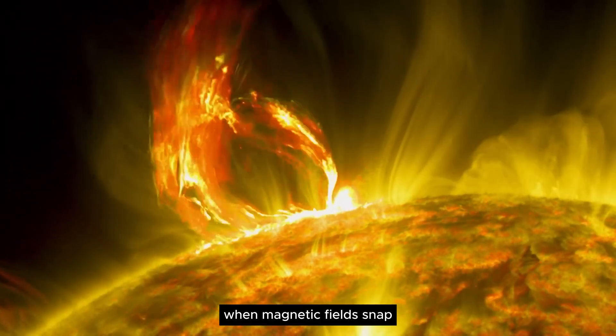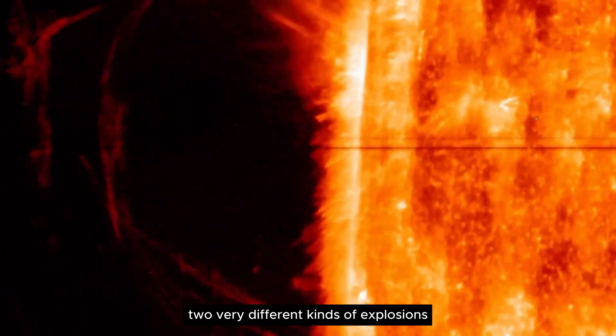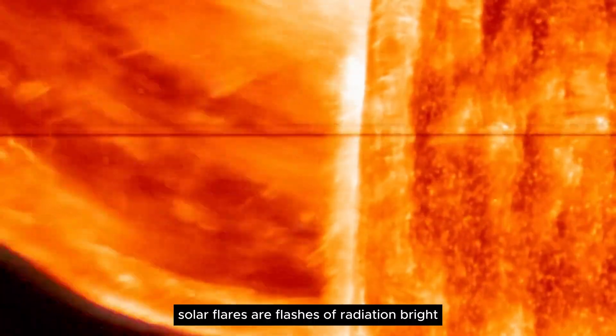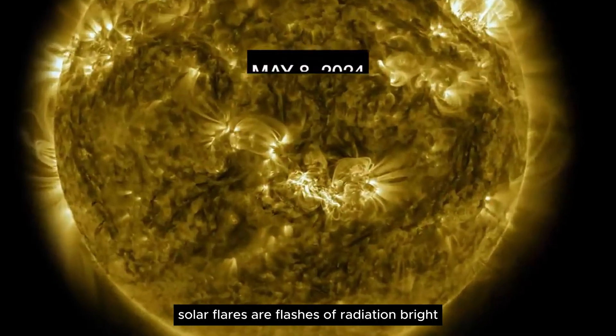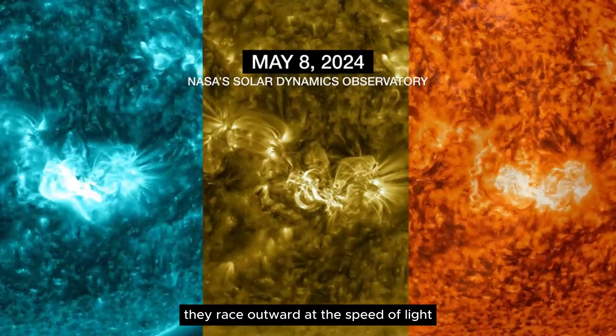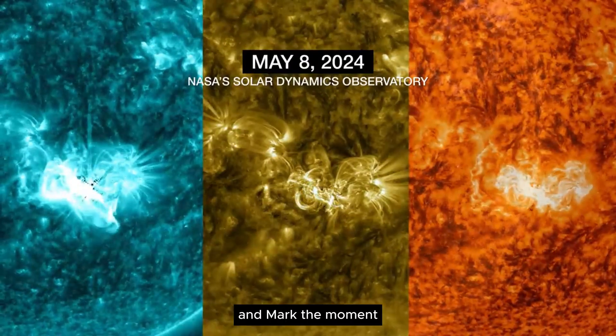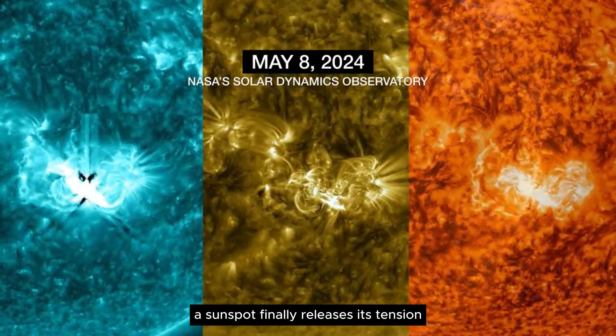When magnetic fields snap, the sun unleashes two very different kinds of explosions. Solar flares are flashes of radiation, bright, fast, and over in minutes. They race outward at the speed of light and mark the moment a sunspot finally releases its tension.